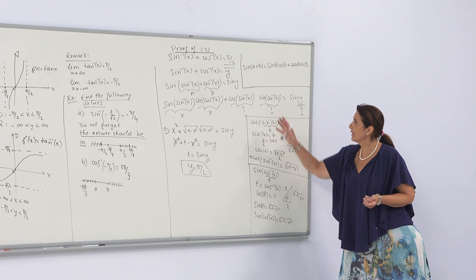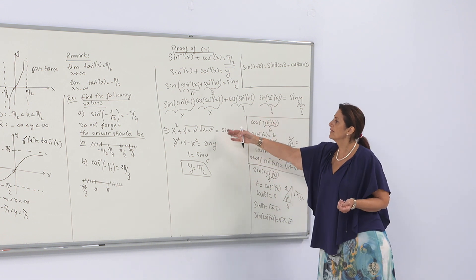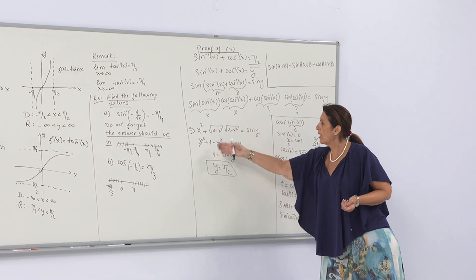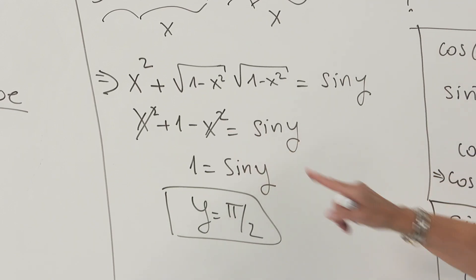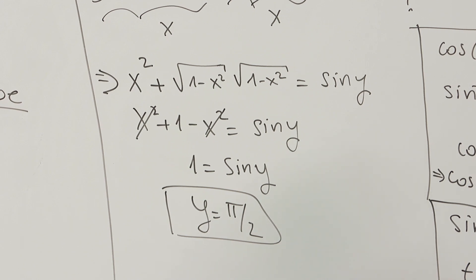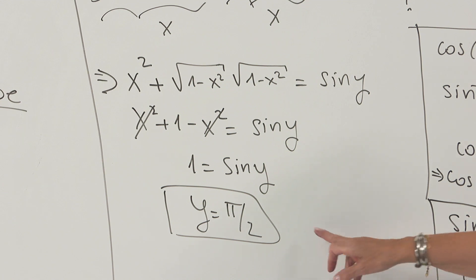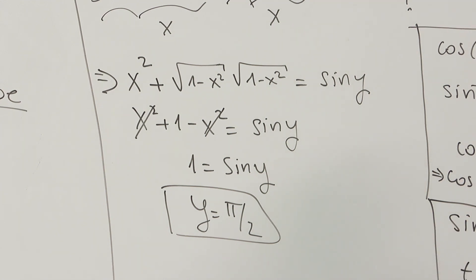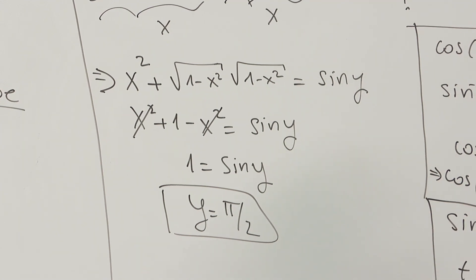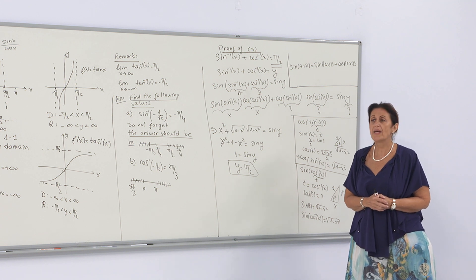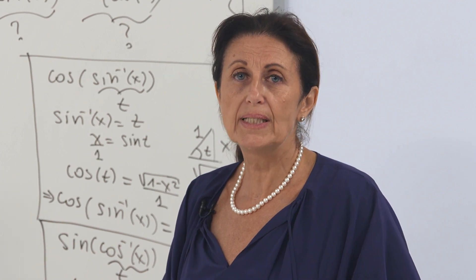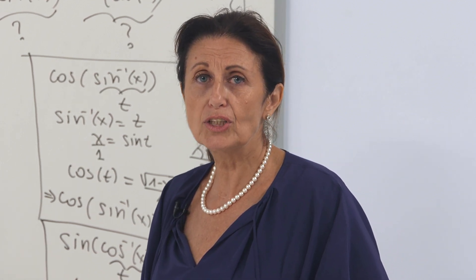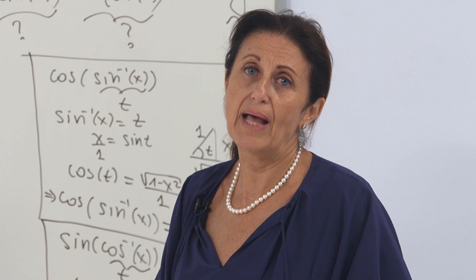Replacing all these findings, I obtain x² plus (1 − x²), which simplifies to 1 equals sine y. What is the angle whose sine equals 1? Of course it's π/2. So I found the answer and proved the identity. Thank you for listening. I hope that this video will help you understand what inverse trigonometric functions are and how we deal with them. Thank you.